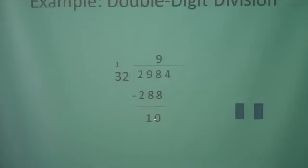This number, when you subtract, can never be equal to or larger than your divisor. We're going to cross out our carry, bring our next number down, and cross out our carry again.